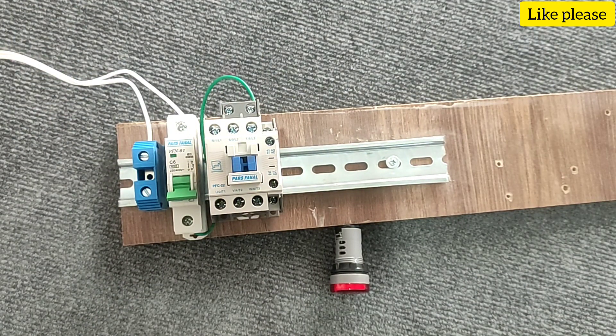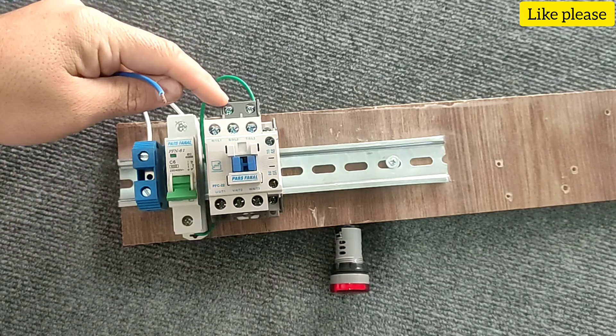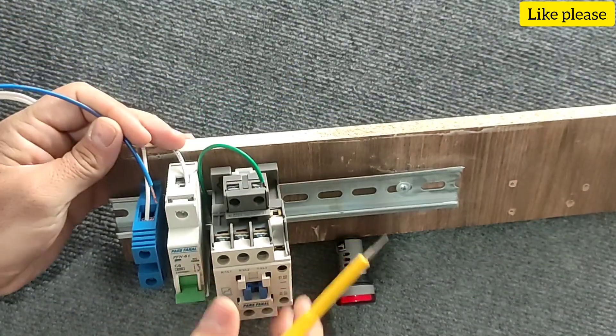To activate the conductor coil, you also need a null wire, so we also connect the null wire to it.